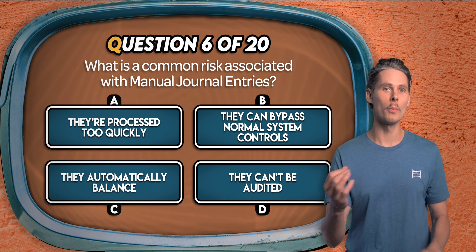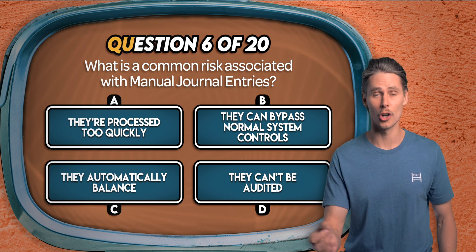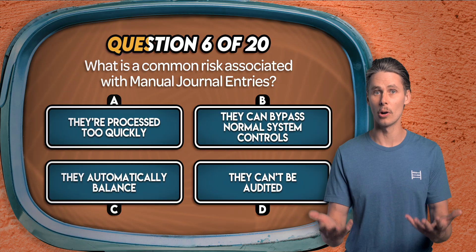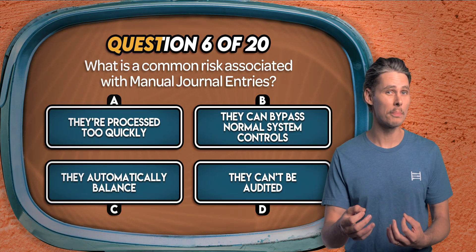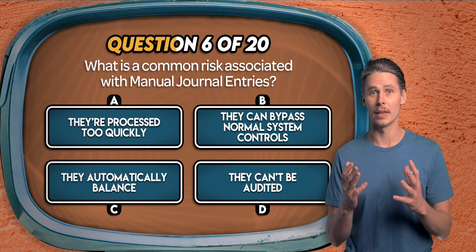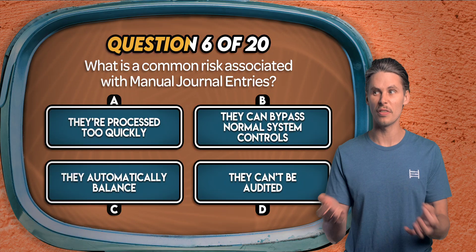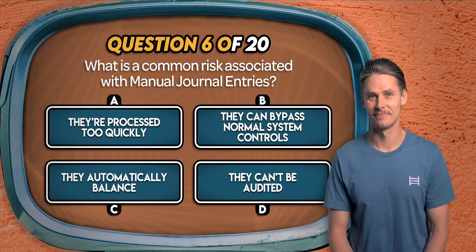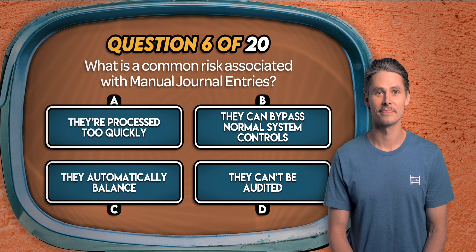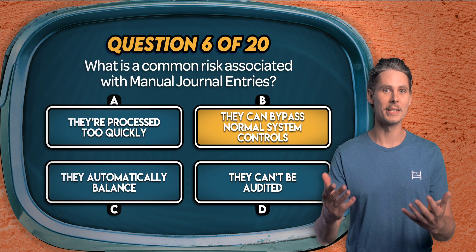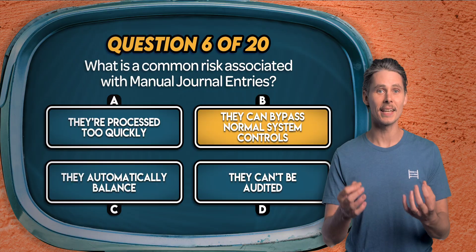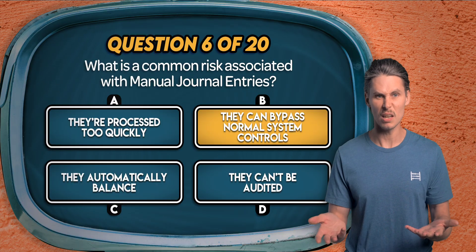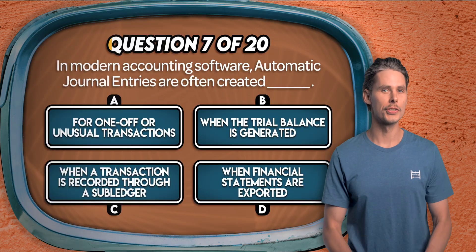Question 6. What is a common risk associated with manual journal entries? Is it that they can be processed too quickly, that they can bypass normal system controls, that they automatically balance, or that they can't be audited? The answer is B. Manual entries can skip some automated checks, so they're prone to errors.